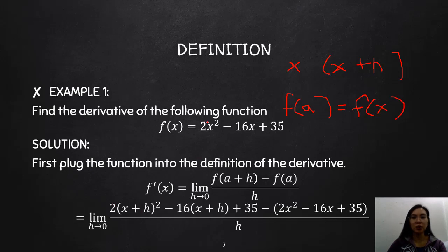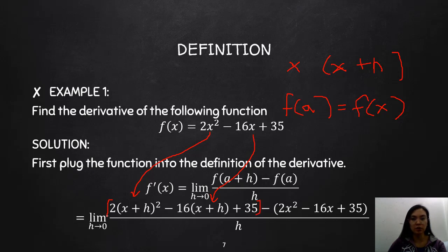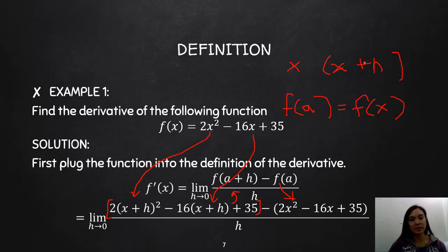So you have 2(x+h)² − 16(x+h) + 35 minus the function 2x² − 16x + 35, all over h. We copied the whole function, substituting x+h for f(x+h), and the original function represents f(x). You just substitute x with x+h, and then f(a) is f(x), all over h.